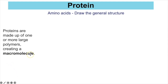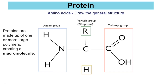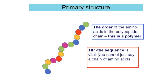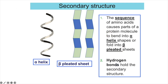Proteins are large polymer macromolecules made up of amino acid monomers. The general structure of an amino acid has a central carbon with an amine group, a carboxyl group, a hydrogen, and an R group — the variable part that differs across all 20 amino acids. Proteins are organised into four levels. The primary structure is the sequence or order of amino acids in a polypeptide chain — emphasising 'sequence' is important for marks.